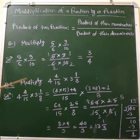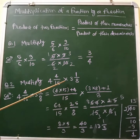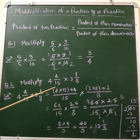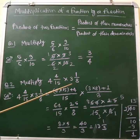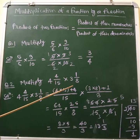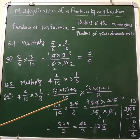Now the second question: multiply 4 and 4/15 by 3 and 1/8. Both of these fractions are mixed fractions, so we first need to convert these mixed fractions into improper fractions.